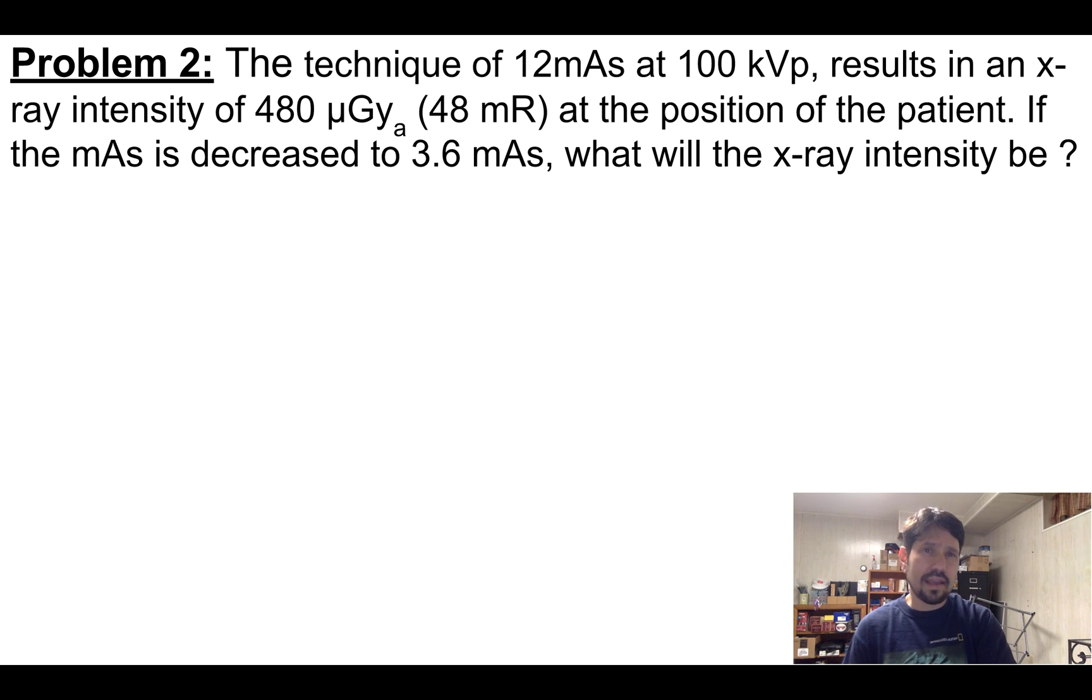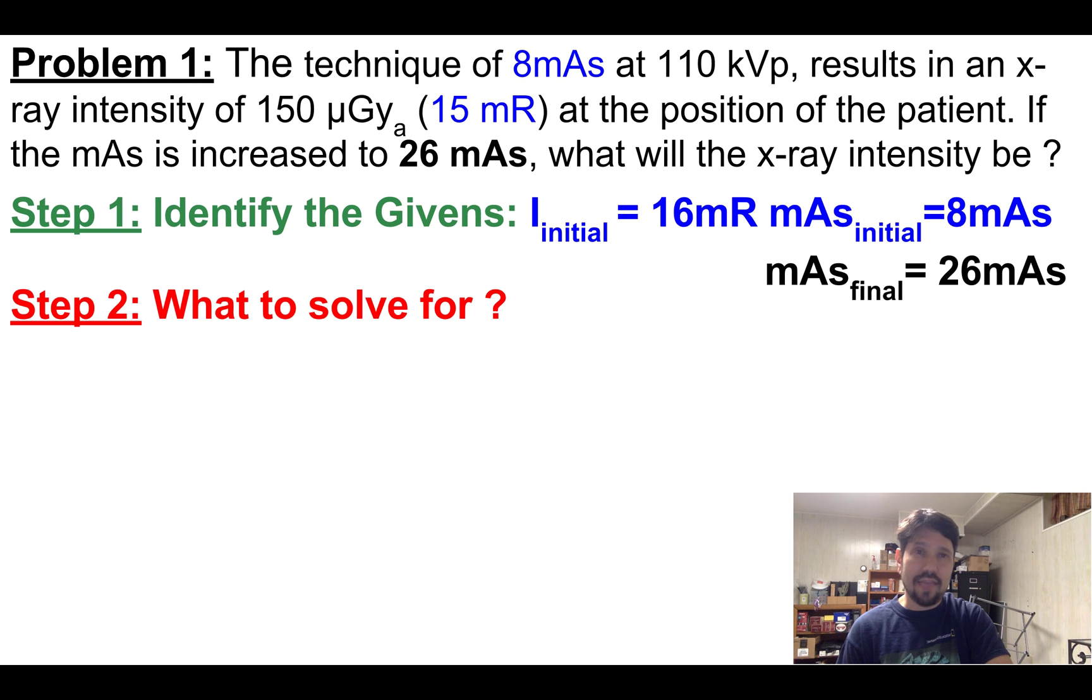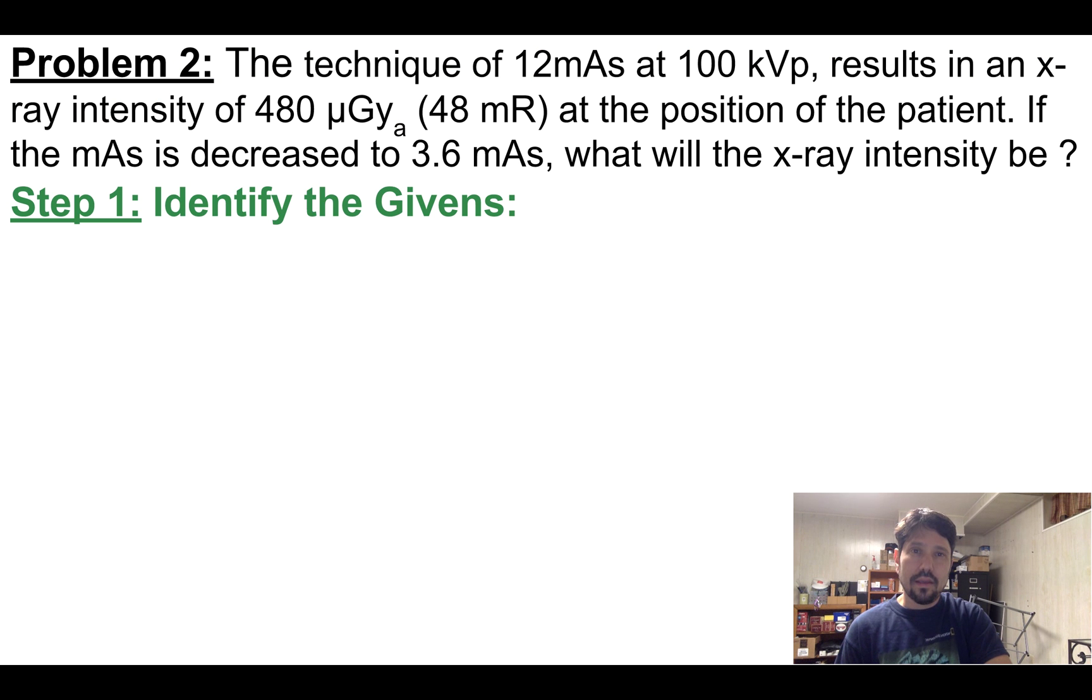Let's take another one. The technique is 12 mAs at 100 kVp, resulting in 480 micrograys in air. What if I drop the mAs to 3.6? In this one, we're not using the kVp. It's staying the same, so we don't have to make any scales in intensity based on a change of kVp. Same in the last one. They gave us a kVp, but we pretty much ignored it.